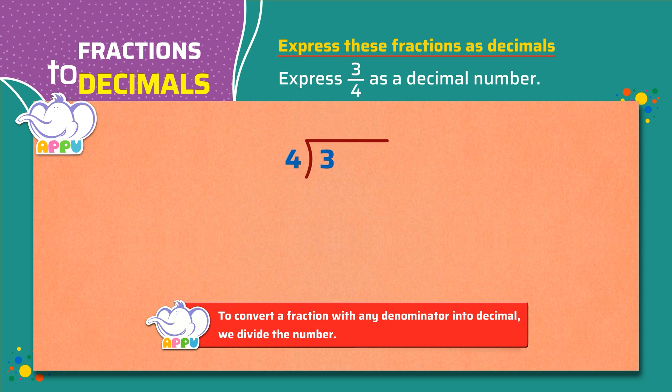Since we cannot divide 3 by 4, we place 0 and a decimal point, and a 0 next to 3. Now we get 30. We divide 30 by 4, which is 7. We subtract 28 from 30, we get 2.